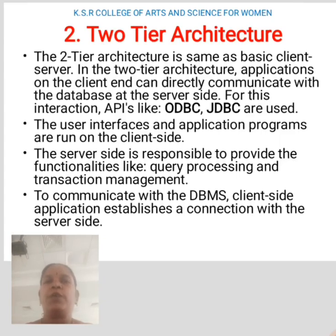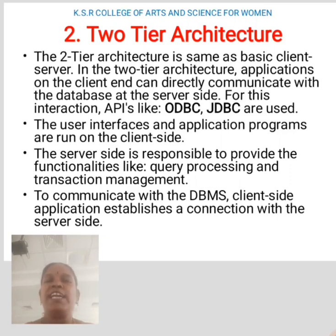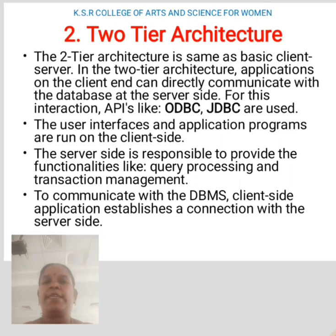Two-tier architecture is the same as the basic client-server model. In the two-tier architecture, an application on the client end can directly communicate with the database at the server side. For this interaction, APIs like ODBC and JDBC are used. The user interface and application programs are run on the client side. The server side is responsible for providing functionality like query processing and transaction management. To communicate with the DBMS, the client-side application establishes a connection with the server side.